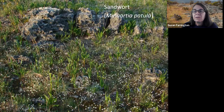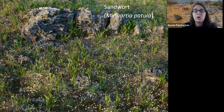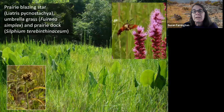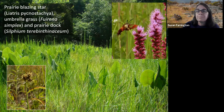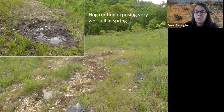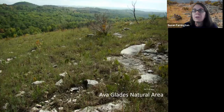Winter annuals like sandwort thrive in shallow soil. The plants sprout when rains saturate the soil in late fall or winter, blooming first thing in spring and then die. Deeper pockets of seepy areas can feature prairie blazing star and umbrella grass. Unfortunately, seepy areas are particularly vulnerable to hog rooting in the spring. Hogs are a serious threat to our glades.